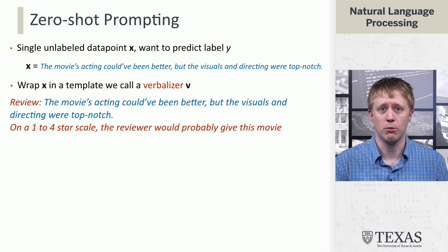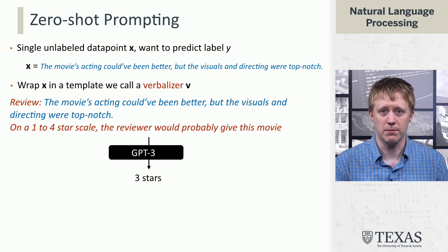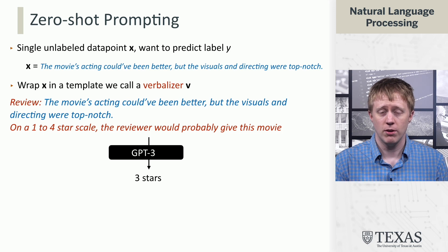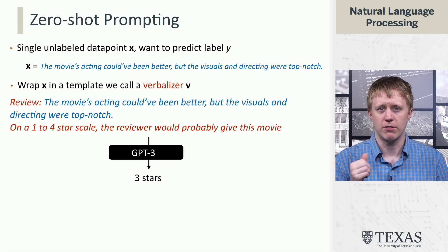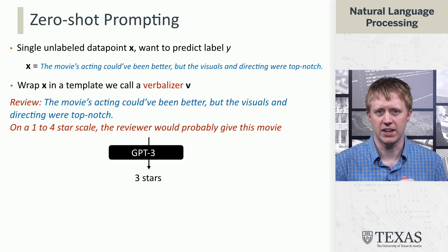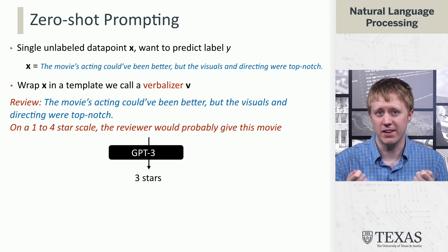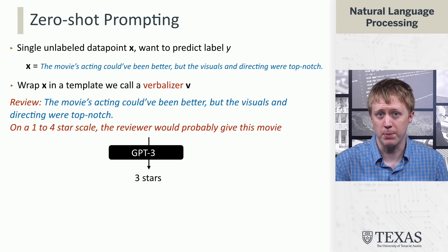We can use different prompts to get different kinds of sentiment judgments. For example, we could say 'on a one to four star scale, the reviewer would probably give this movie blank,' and maybe it would generate 'three stars' as a continuation. This gives greater flexibility than in a lot of classification tasks, because we're able to specify some sort of label space, and ideally the model will respect that.